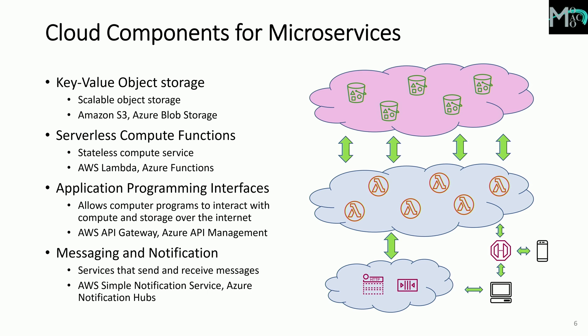Messaging and notification services provide an additional model for activating serverless compute functions when messages or notifications are received. Examples include Amazon Simple Notification Service and Azure Notification Hub. Desktops and mobile devices can use these resources to orchestrate the submission and monitoring of millions of tasks that would traditionally be viewed as a single large MPI job. So: storage in the cloud, serverless Lambda functions, messaging services, and monitoring via web-based console services provided by all cloud providers.